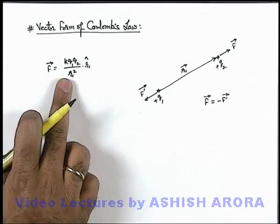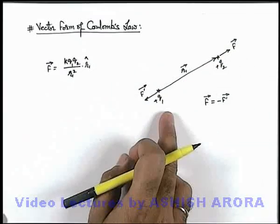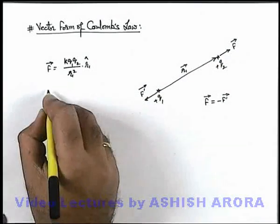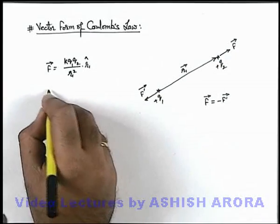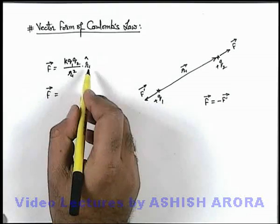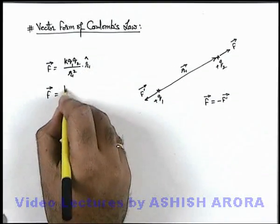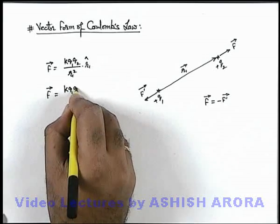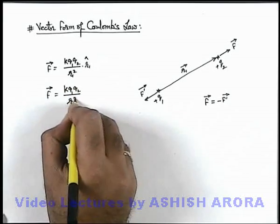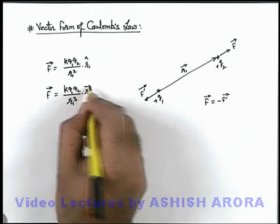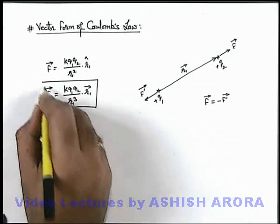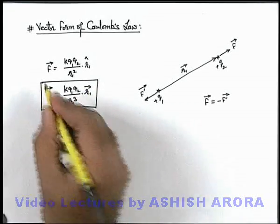And this can be further written as F vector. We can write if we substitute the value of unit vector, it is vector upon its modulus. So this will be k q1 q2 by r1 cube multiplied by r1 vector. This is the way how we vectorially represent Coulomb's Law.